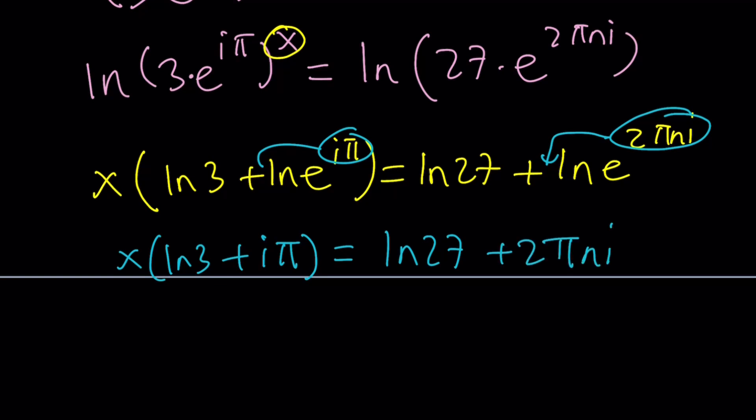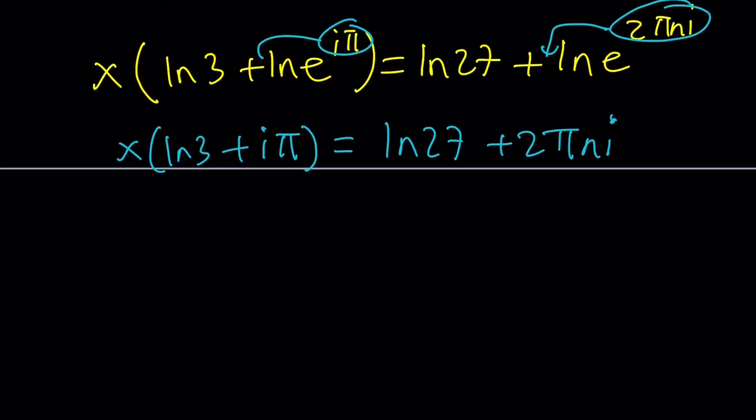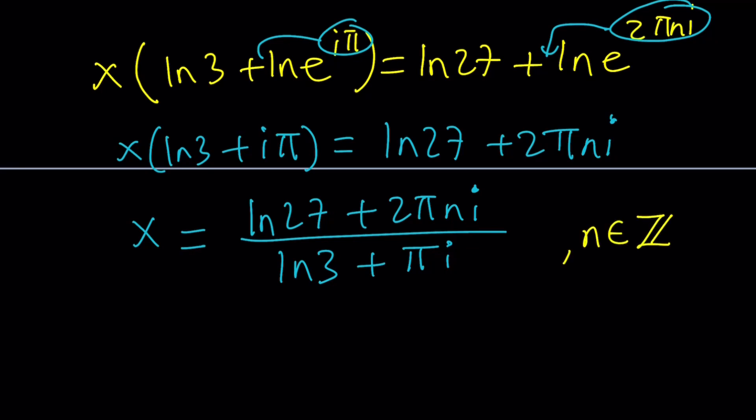Now, what are we going to do? We're going to solve for x. So I think we should divide both sides by this expression. x equals ln 27 plus 2 pi n i divided by ln 3 plus pi i. You could also write i pi, but I wanted to keep the pi i at the end to make them kind of look alike. So that would be the answer. But what is n? n is an integer. Did I forget to say that? n is element of Z. Zahlen, German for number, I think. So that would be the x value.